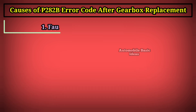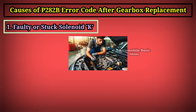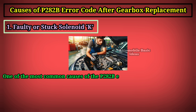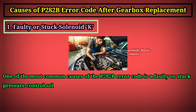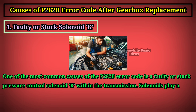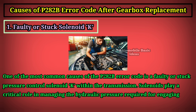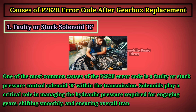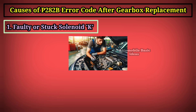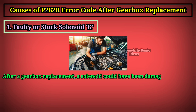One: faulty or stuck solenoid K. One of the most common causes of the P282B error code is a faulty or stuck pressure control solenoid K within the transmission. Solenoids play a critical role in managing the hydraulic pressure required for engaging gears, shifting smoothly, and ensuring overall transmission performance.